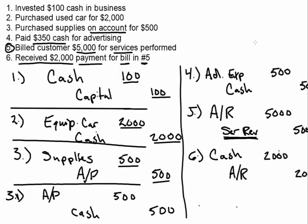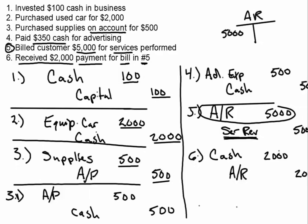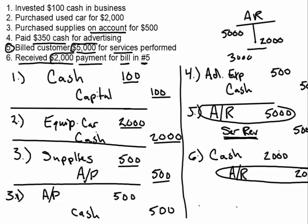If we drew a little T-account and called it AR: AR started with $5,000 they owe us, and then we credited AR in this transaction for $2,000, so the balance they owe us now is $3,000. That makes sense because we originally charged them $5,000, they made a $2,000 payment, so they still owe us $3,000.